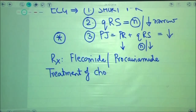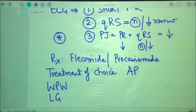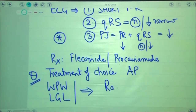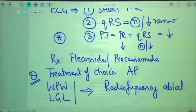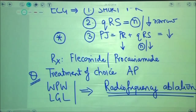If asked the treatment of choice for patients with accessory pathway — whether it is Wolf-Parkinson-White or Lown-Ganong-Levine syndrome — the treatment of choice for any patient with an accessory pathway should always be answered as radiofrequency ablation. Radiofrequency ablation helps in termination of the arrhythmia by causing complete ablation of the accessory pathway present in the heart, and is therefore the treatment of choice.